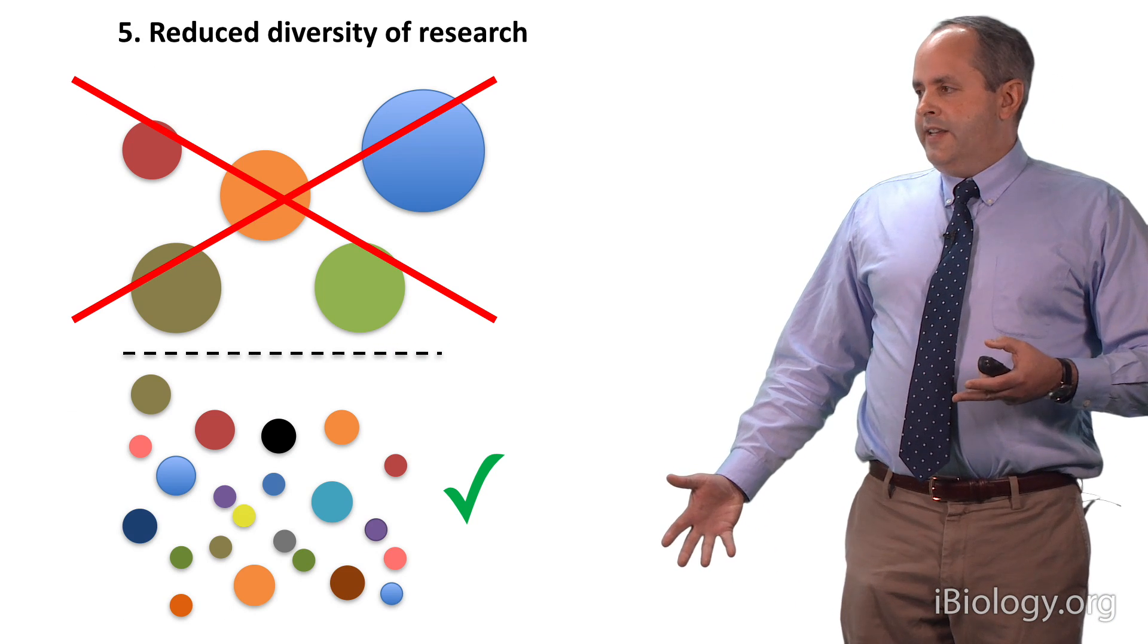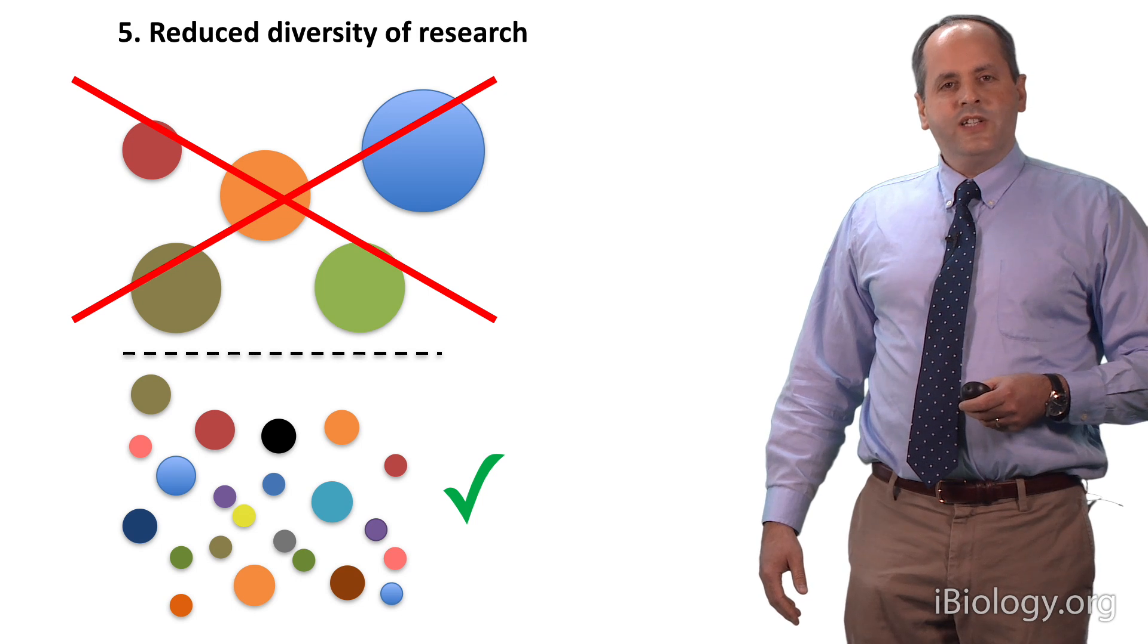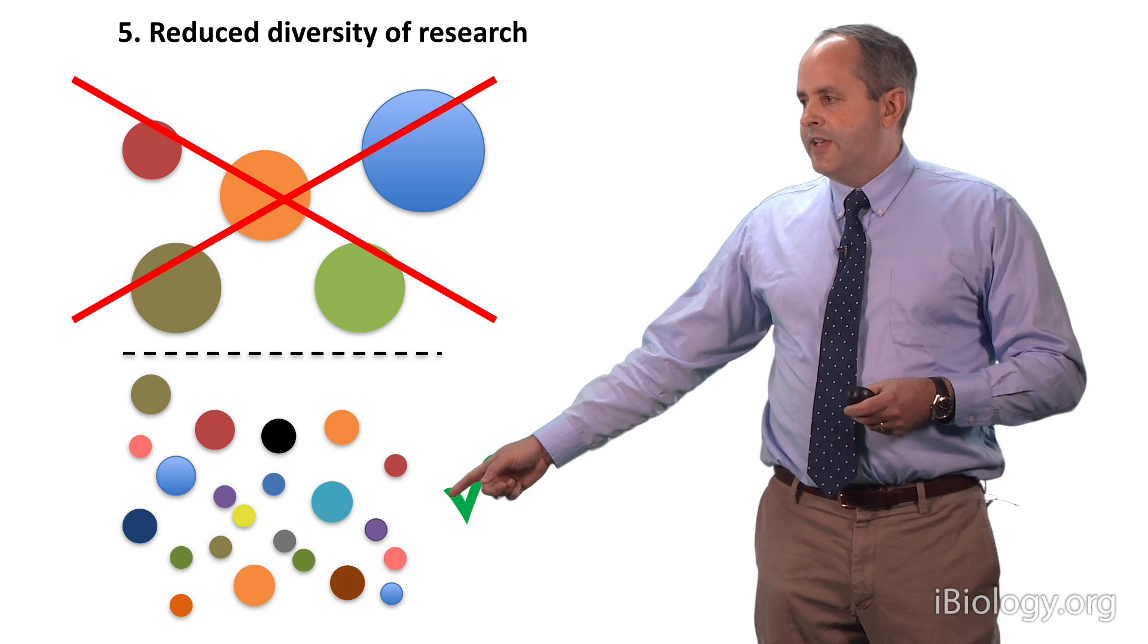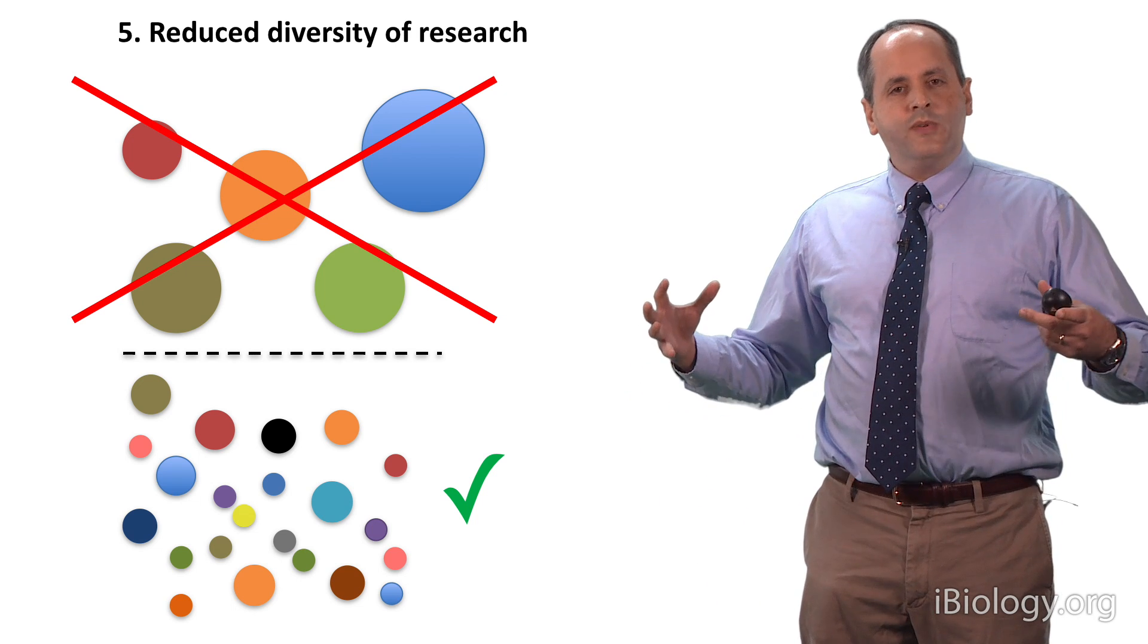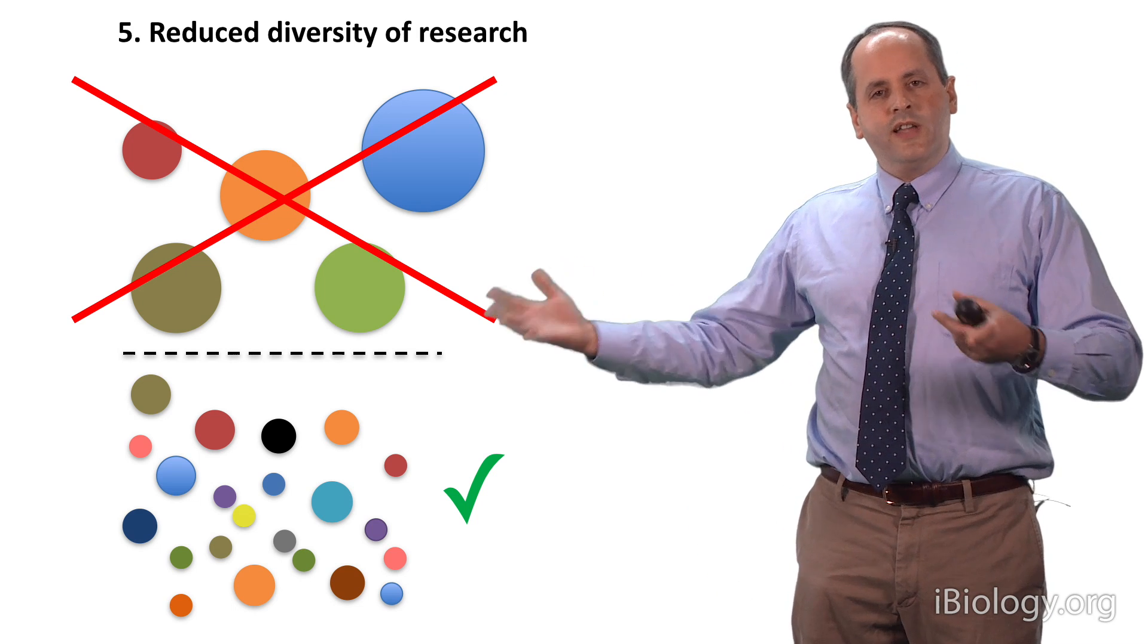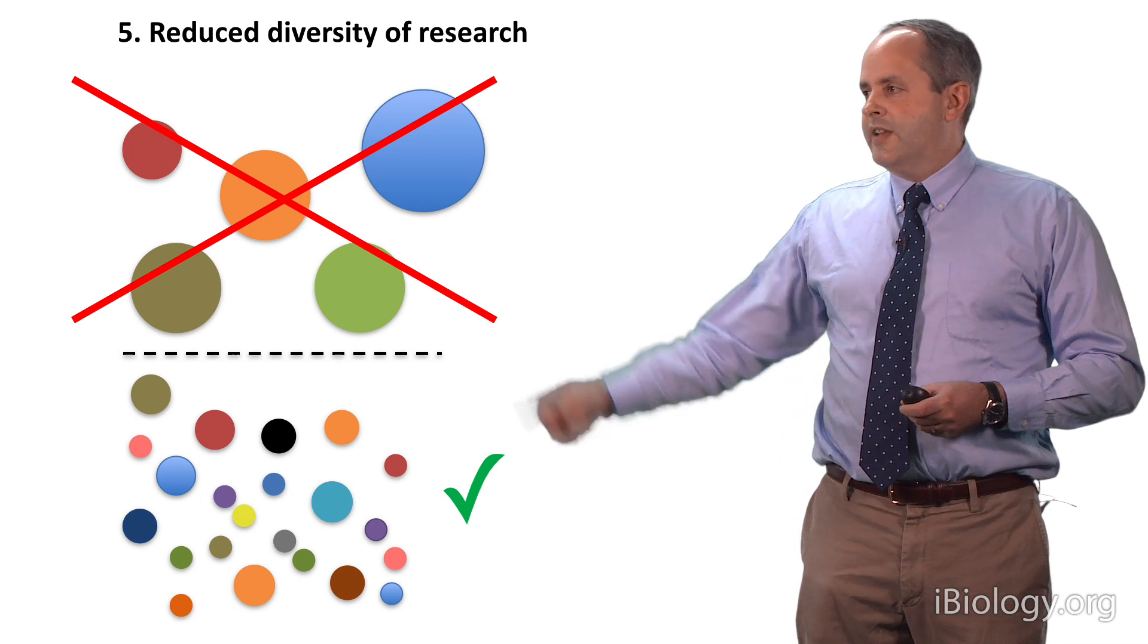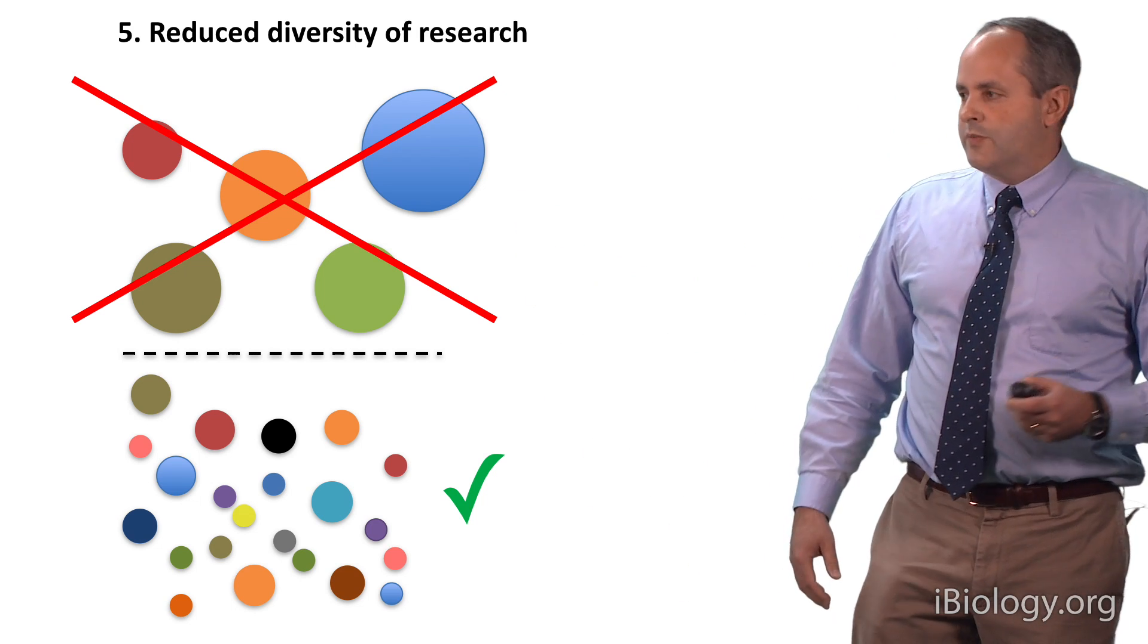So what do these data indicate to us? Well, I think they indicate to us that Bruce Alberts' logic was correct. In fact, having a more diverse research ecosystem with a larger number of more moderately sized research groups is going to be more productive, more efficient, and ultimately more impactful than having the less diverse ecosystem of larger research groups.